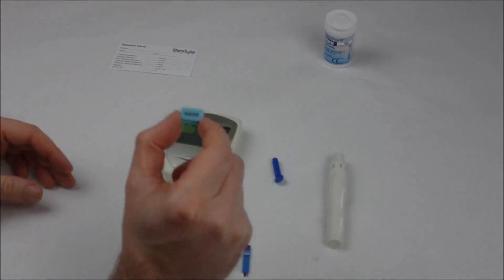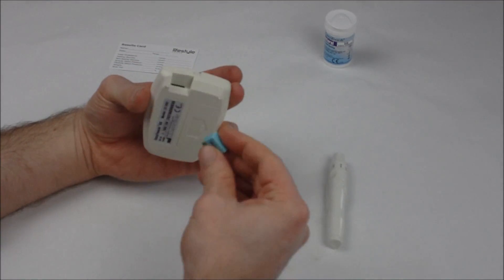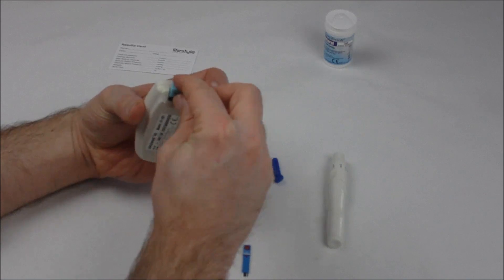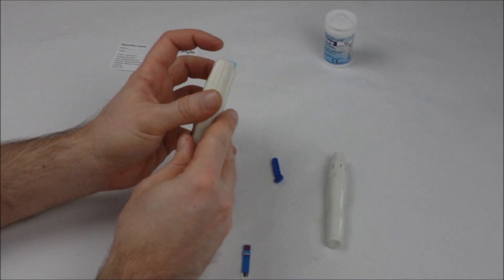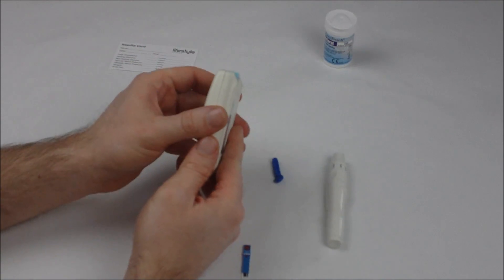First of all, insert your code key into the back of your monitor. This should fit in just one orientation. Push down and notice how the code key runs flat with the top of the monitor.